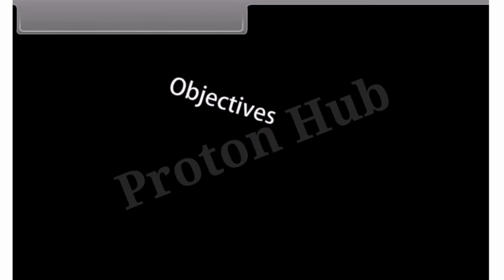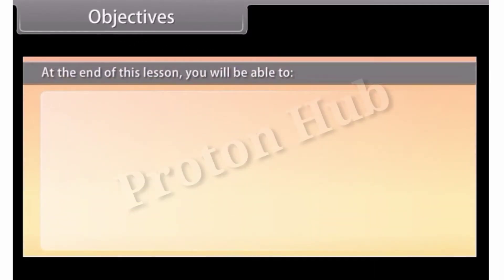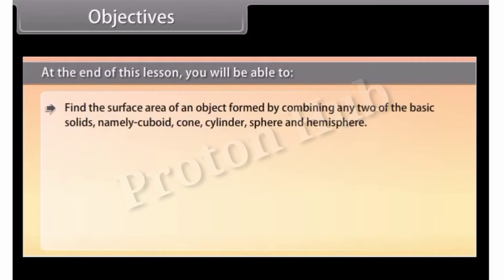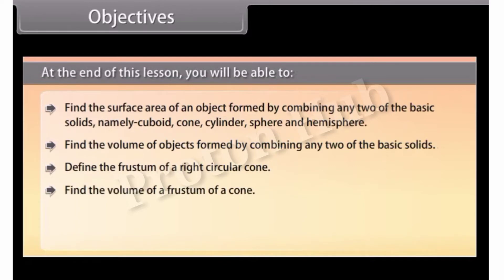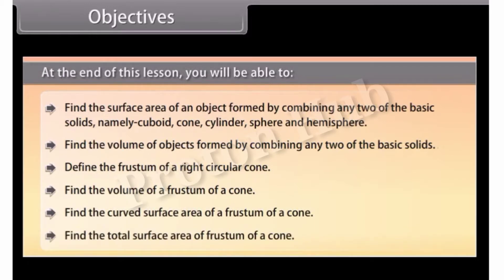At the end of this lesson, you'll be able to: find the surface area of an object formed by combining any two of the basic solids — namely cuboid, cone, cylinder, sphere, and hemisphere. Find the volume of objects formed by combining any two of the basic solids. Define the frustum of a right circular cone. Find the volume, curved surface area, and total surface area of a frustum of a cone.